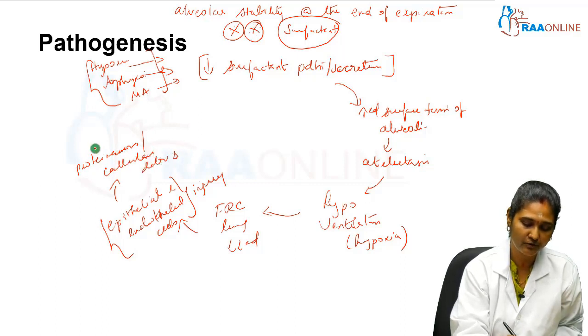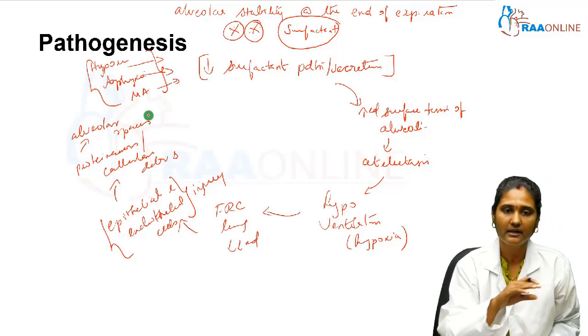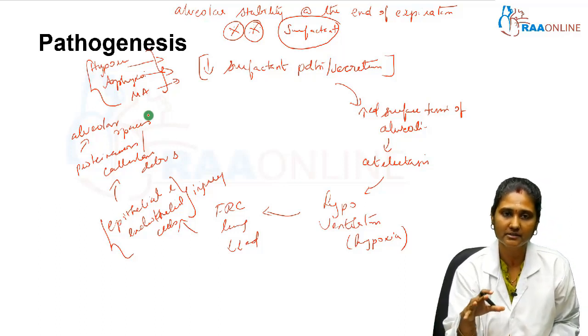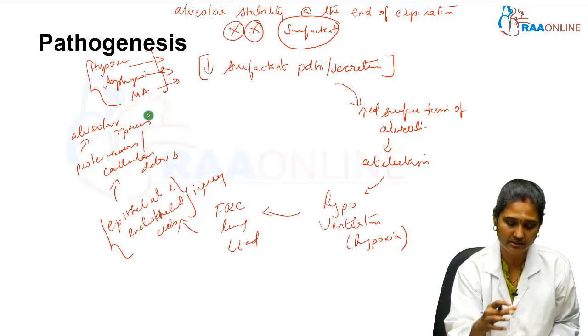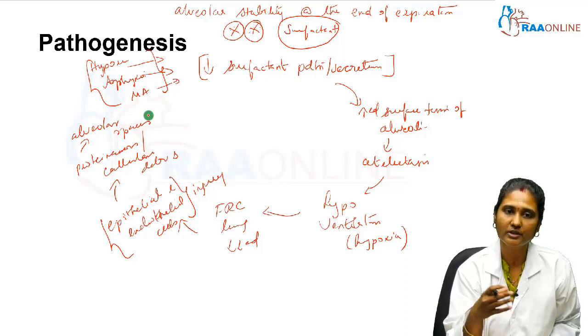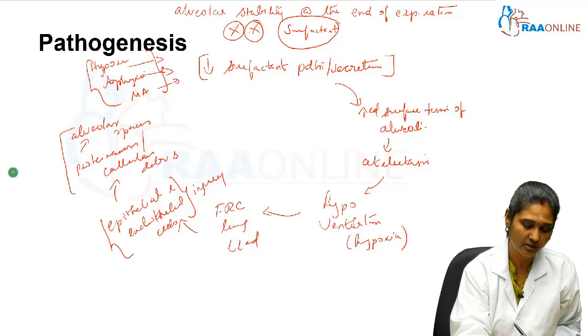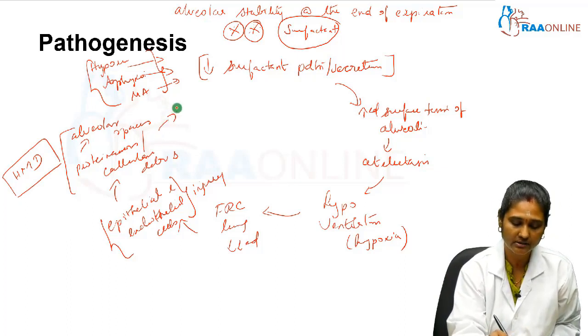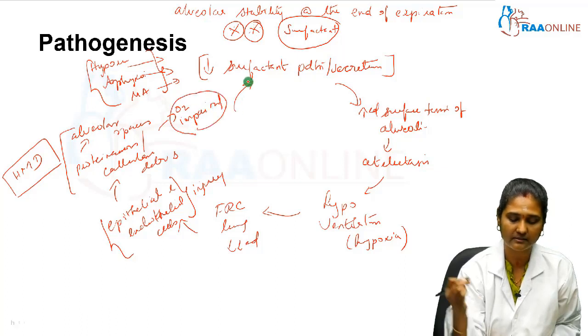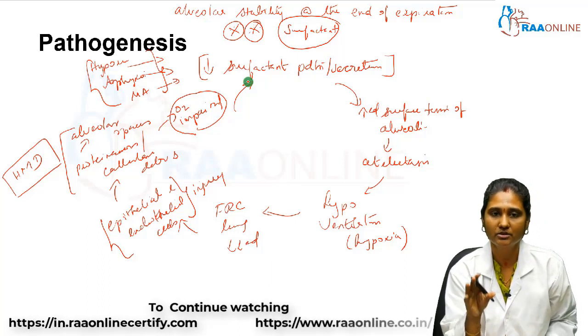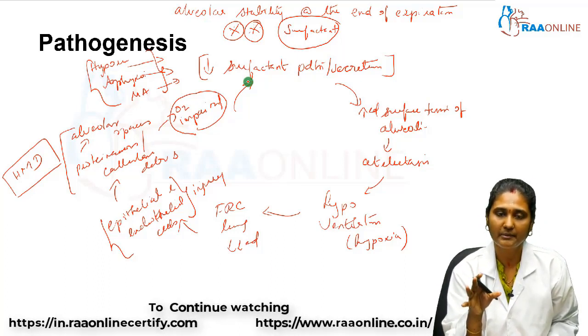These injured cells produce more proteinaceous substances or cellular debris. This debris is effused into the alveolar spaces. That's why you can see in radiology a ground glass appearance. This ground glass appearance is because of cellular debris and proteinaceous substance effused into alveolar spaces due to epithelial endothelial injury from hypoxemia. That is why it is also called hyaline membrane disease. Due to this, oxygenation is impaired. This oxygenation impairment again decreases surfactant production. It forms a vicious cycle. This is the pathogenesis behind respiratory distress syndrome in newborns.